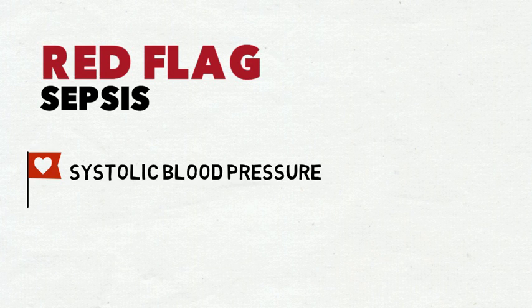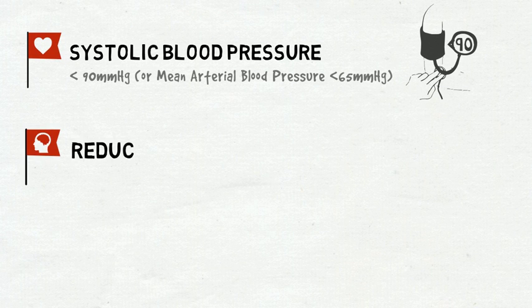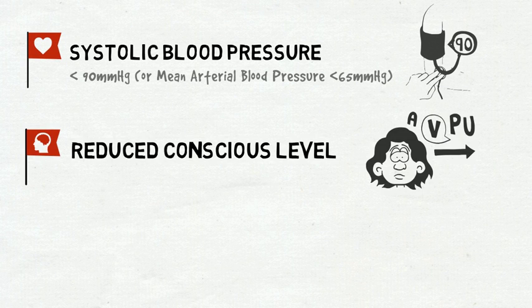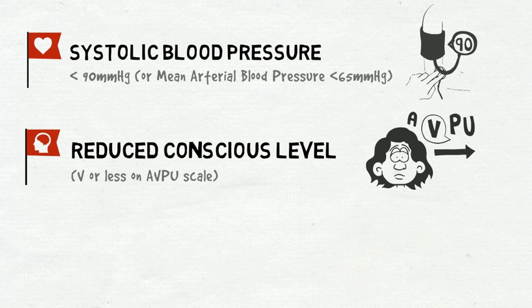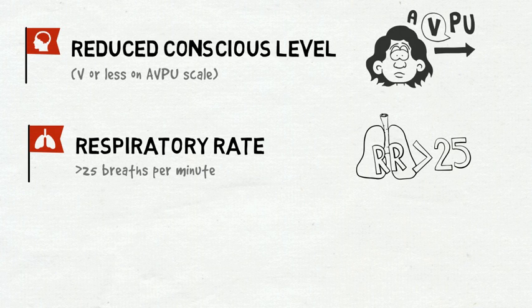Systolic blood pressure less than 90 mmHg or mean arterial blood pressure less than 65 mmHg, reduced conscious level V or less on AVPU scale, respiratory rate greater than 25 breaths per minute.